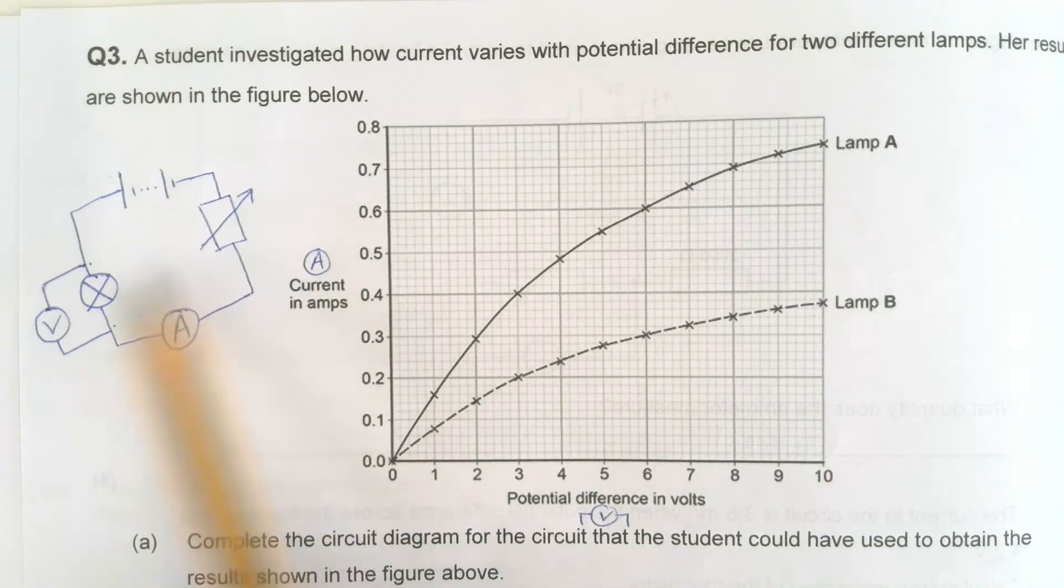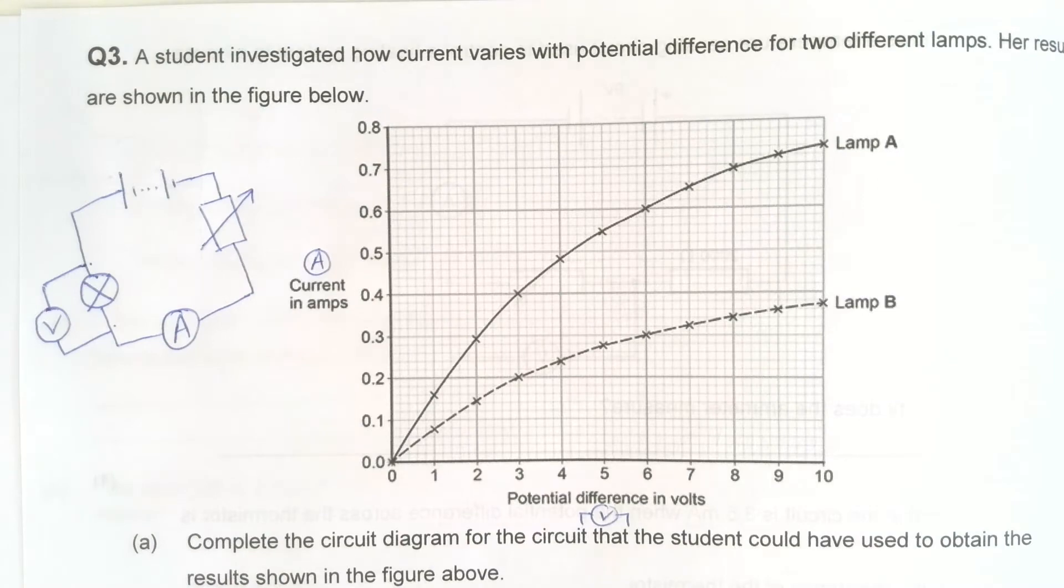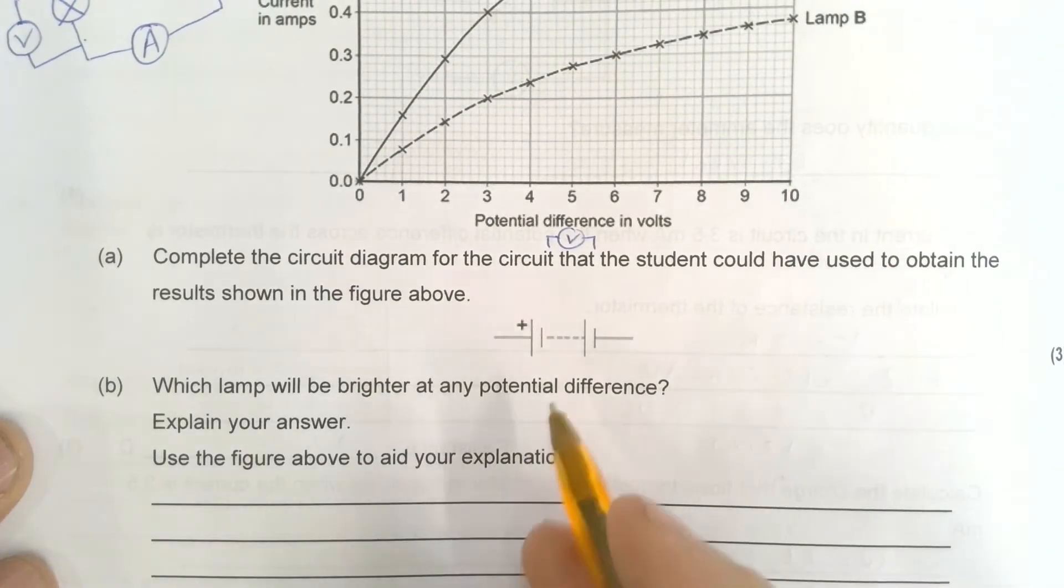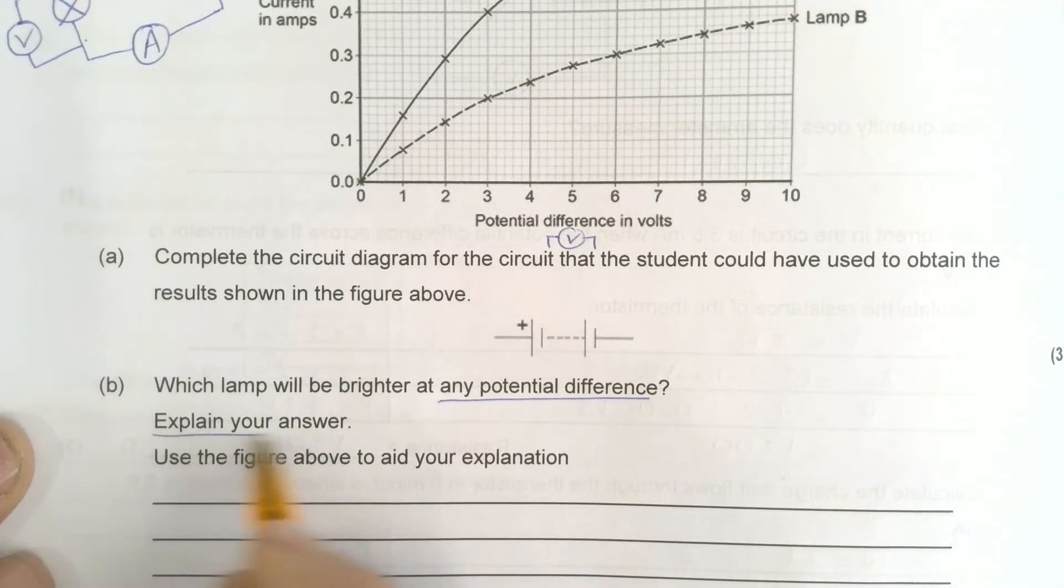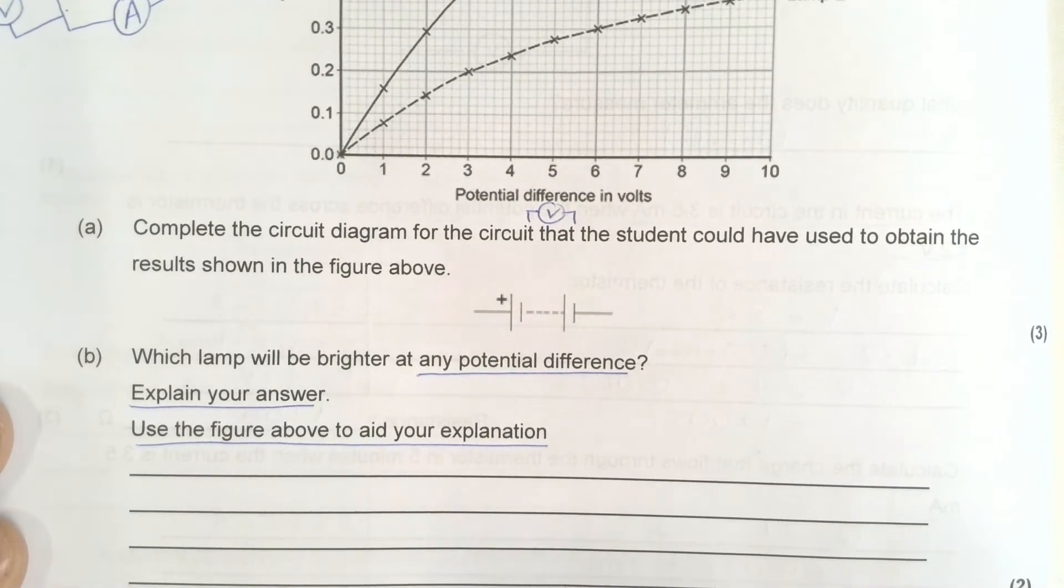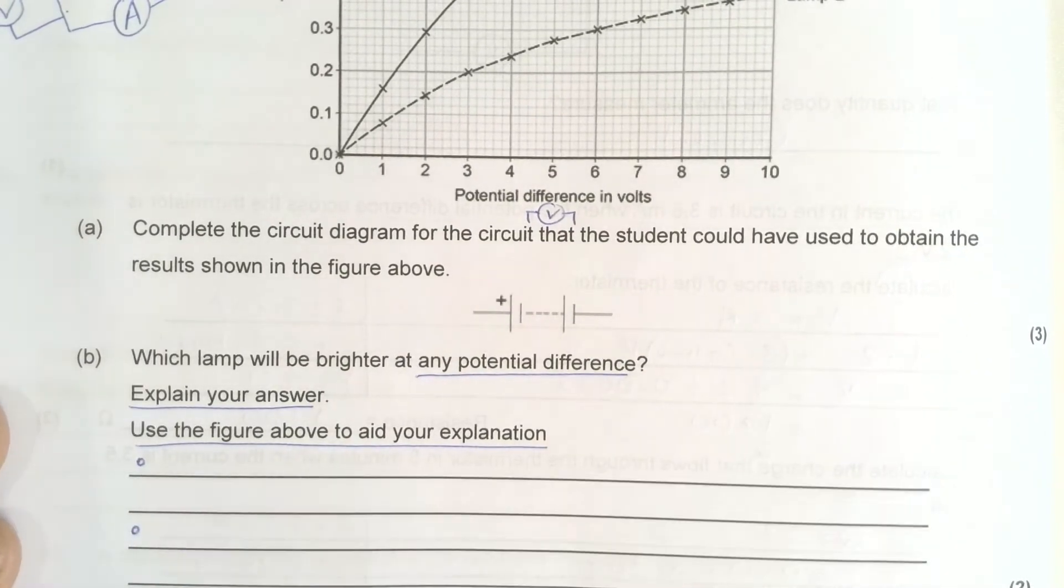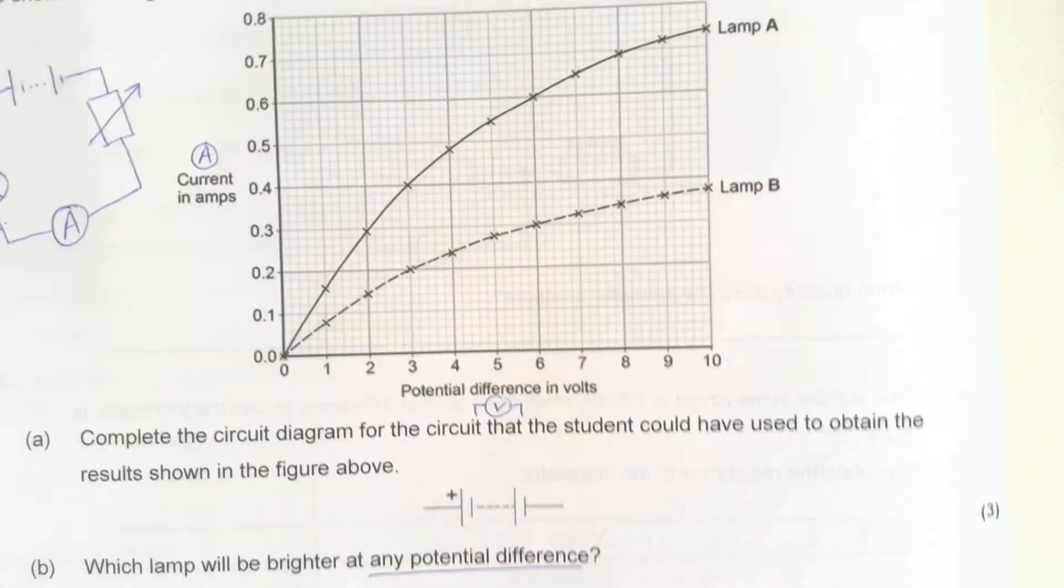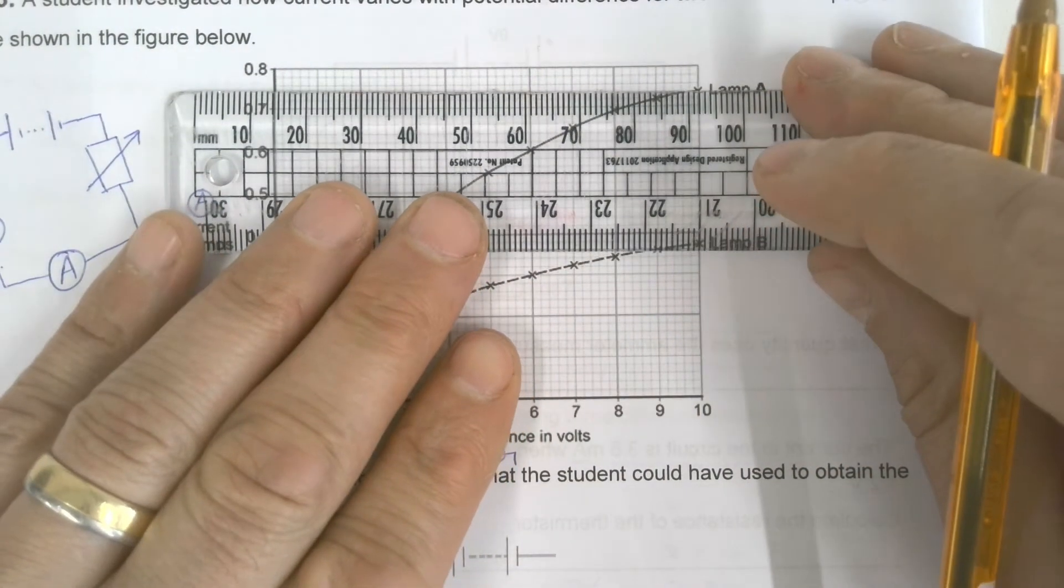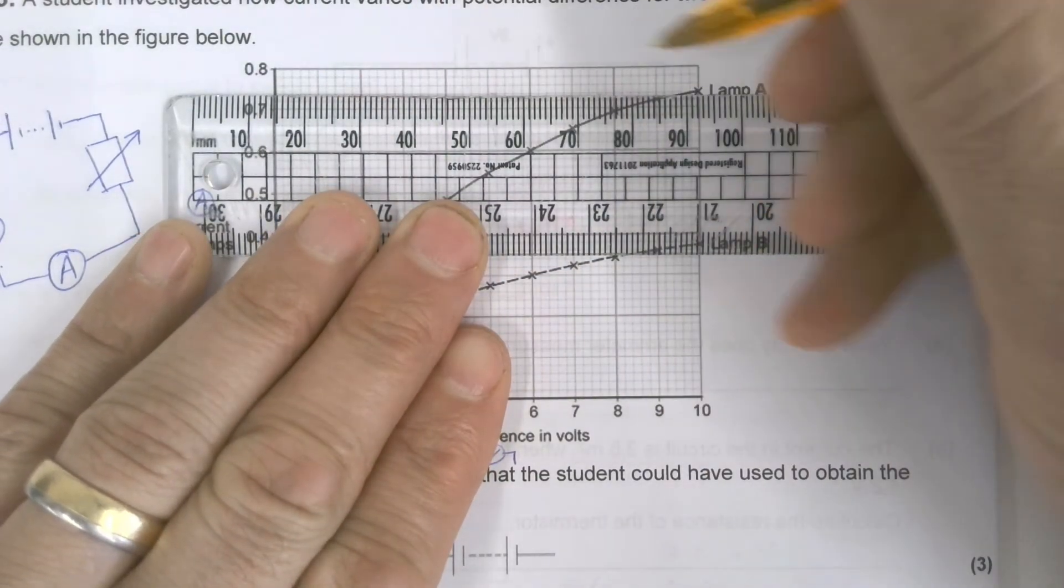That's that question, three marks. Which lamp will be the brightest at any potential difference? Explain your answer and use the figure above to aid your explanation. The fact I've got to use the figure means I need to draw on that graph. It's worth two marks, so I need two bullet points. Let's see, it's going to be lamp A. It's always going to be lamp A.